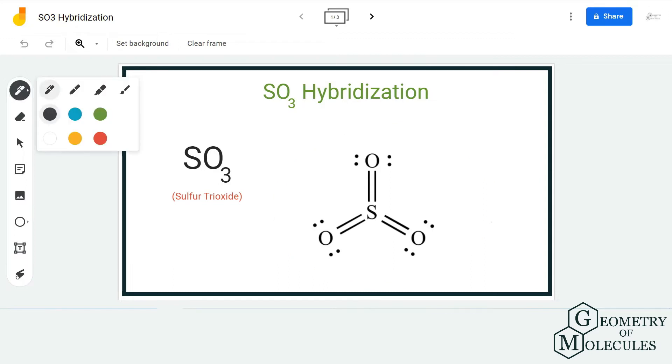Here, a sulfur atom is forming bonds with three oxygen atoms, and as a result its steric number is three because there are three electron regions around the sulfur atom.